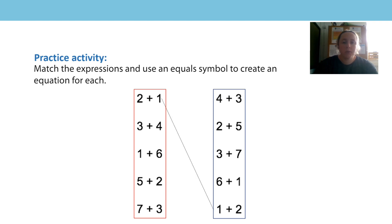Two add one would match to one add two. Both expressions have a two and a one. In the first expression in the red box, the two comes first and the one comes second. In the second expression in the blue box, the one comes first and the two comes second. The sum of both expressions is three, so we can use the equal sign between them.